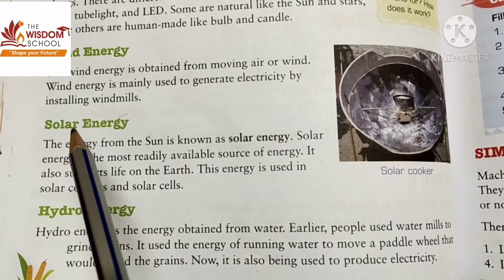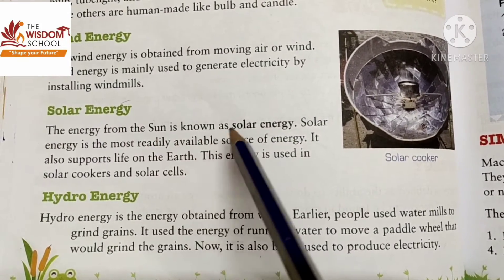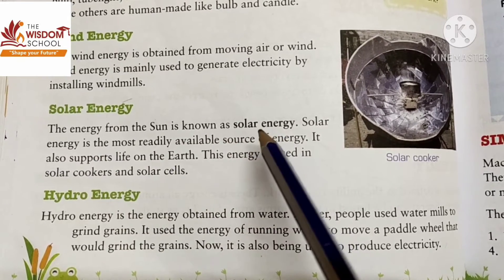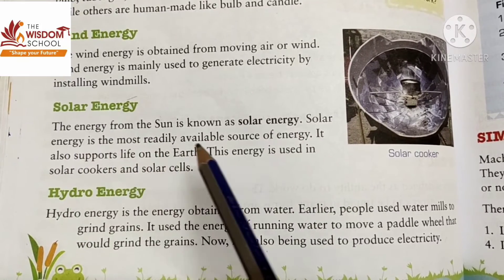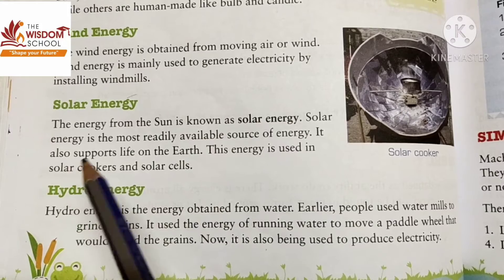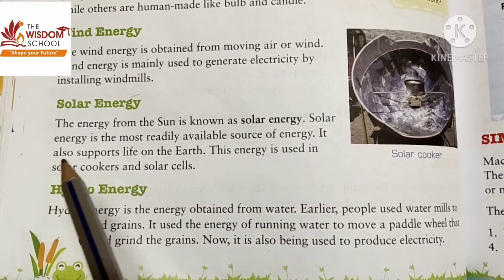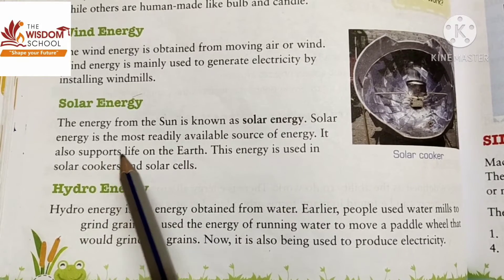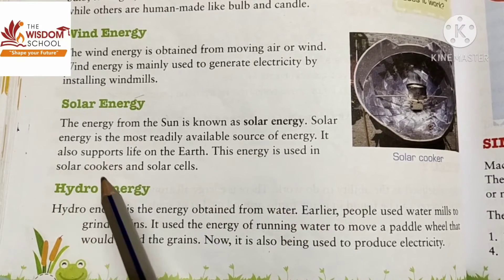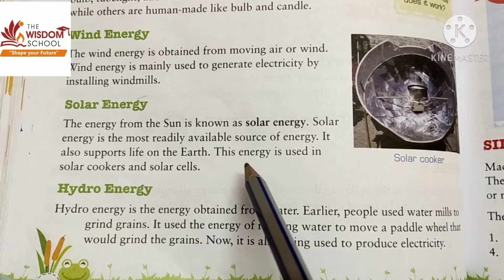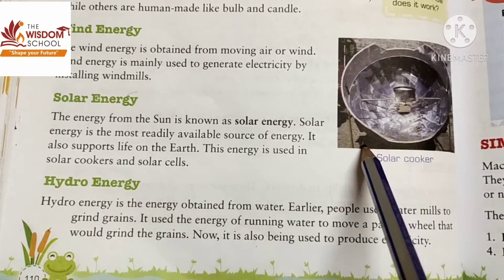What is solar energy? The energy from the sun is known as solar energy. Solar energy is the most readily available source of energy and it also supports life on the earth. This energy is used in solar cookers and solar cells.